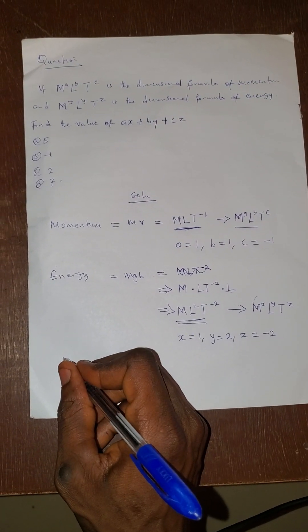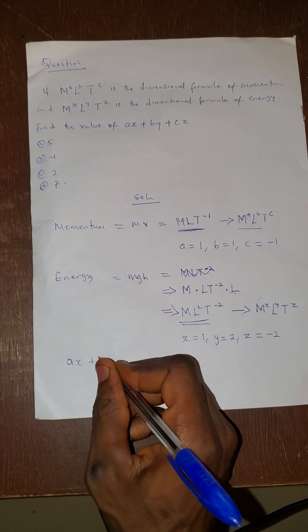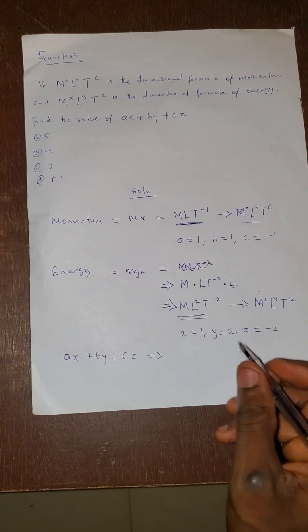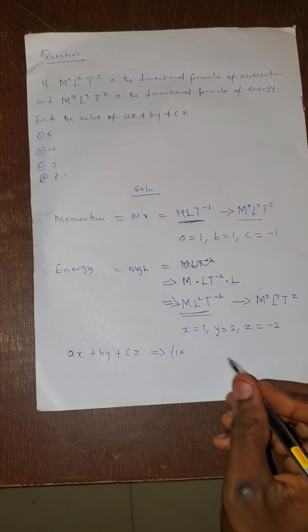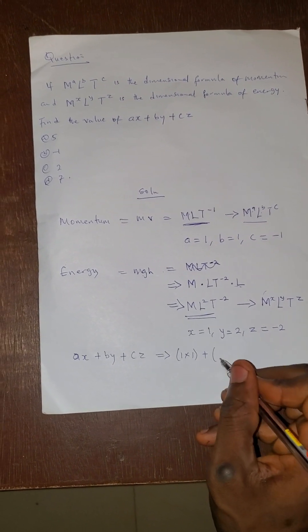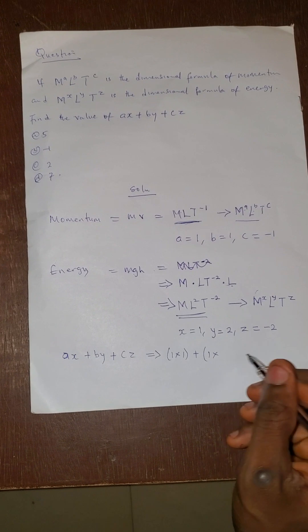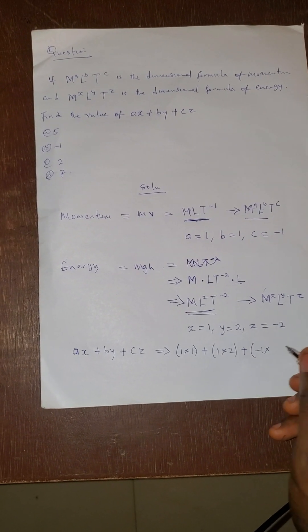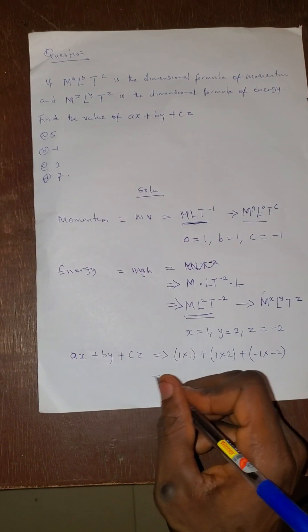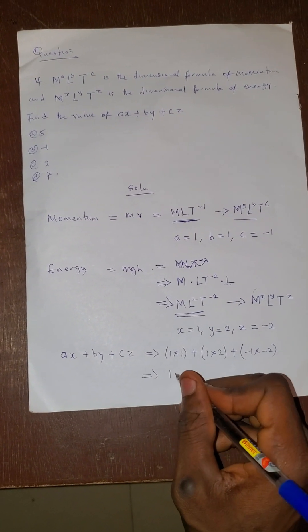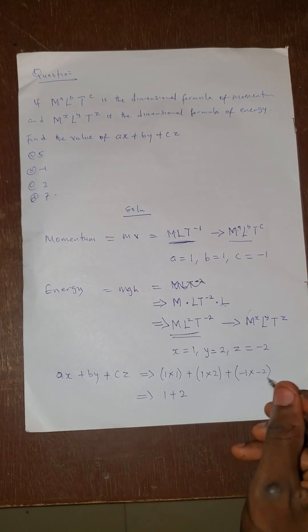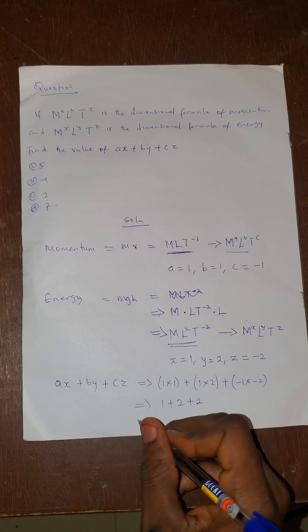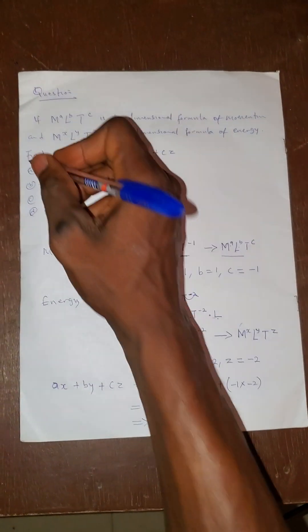Therefore, the value we have to find is ax plus by plus cz. So it will be equal to: our a is 1, multiply by x which is 1, plus our b is also 1, multiply by y which is 2, plus our c is minus 1, multiply by z which is minus 2. We now calculate this. This one is 1, plus 1 times 2 will be 2, then minus 1 times minus 2 will also be 2. And the final answer here is 5.